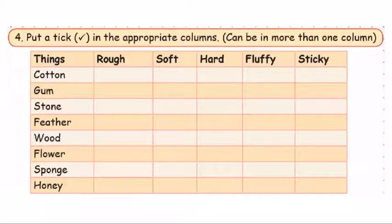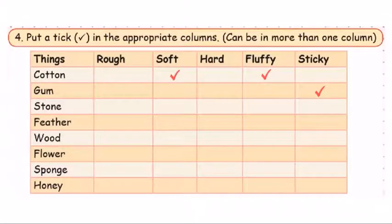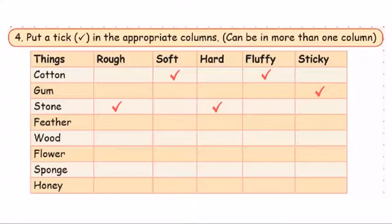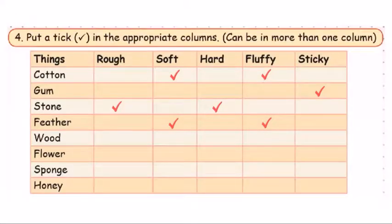Cotton is soft and fluffy. Stone is rough and hard. Feather is soft and fluffy. Wood is rough.